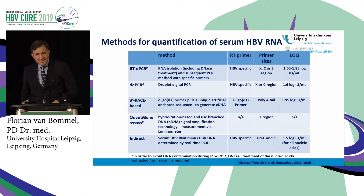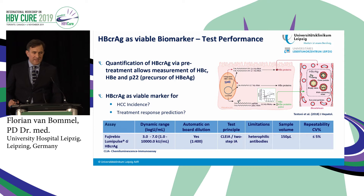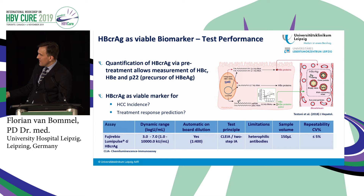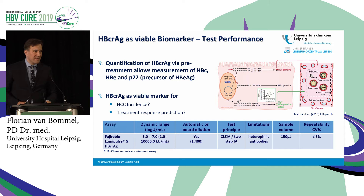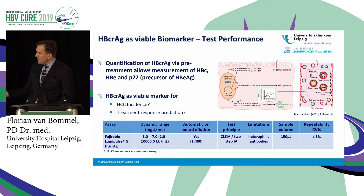The core-related antigen is an ELISA that detects the core proteins and is commercially available by Fujirebio. However, the dynamic range is quite low — it is an automated test with a dynamic range between 3 and 7 log. Below 3 log, you frequently get false positive or possibly false negative signals. It is possible to dilute serum samples to enlarge the dynamic range for high-level core-related antigen, but until now it has been impossible to reliably measure below those 3 logs.